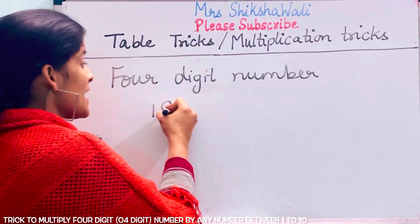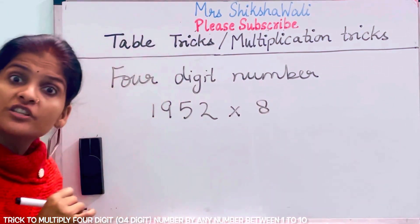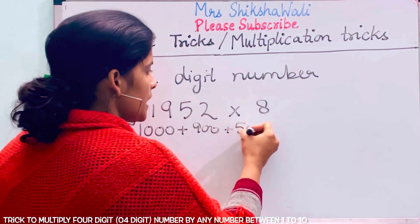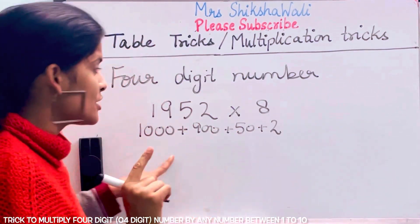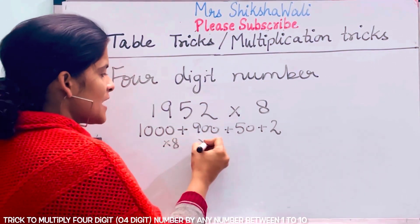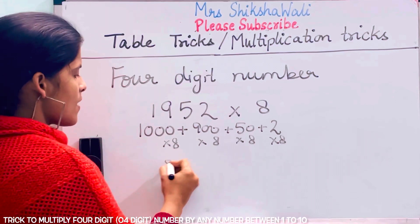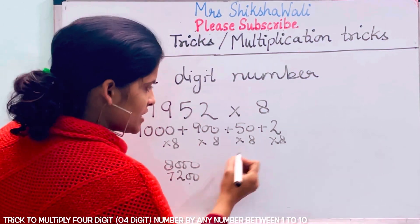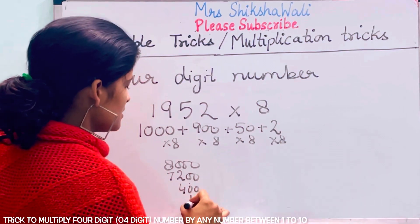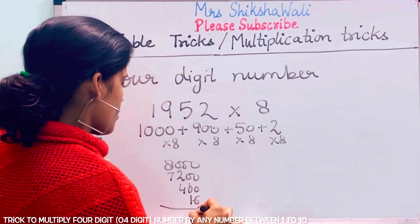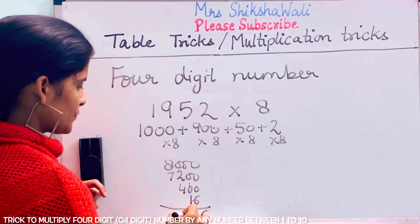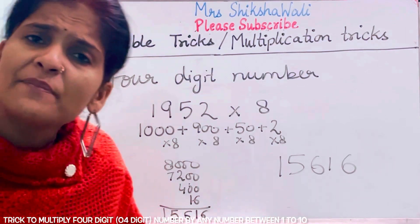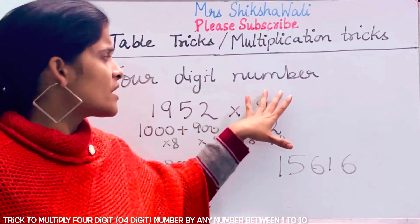Now let's see a four-digit number: 1952 × 8. Expand it: 1000 plus 900 plus 50 plus 2. Then multiply each part by 8: 1000 × 8 = 8000, 900 × 8 = 7200, 50 × 8 = 400, 2 × 8 = 16. The final answer is 15616. I hope you have understood how big a number can be multiplied this way.